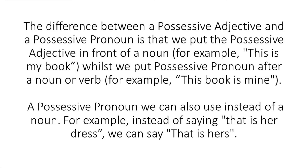The difference between a possessive adjective and a possessive pronoun is that we put the possessive adjective in front of a noun. For example: this is my book. Whilst we put a possessive pronoun after a noun or verb. For example: this book is mine. A possessive pronoun we can also use instead of a noun. For example, instead of saying that is her dress, we can say: that is hers.